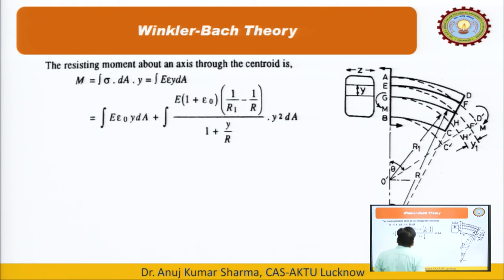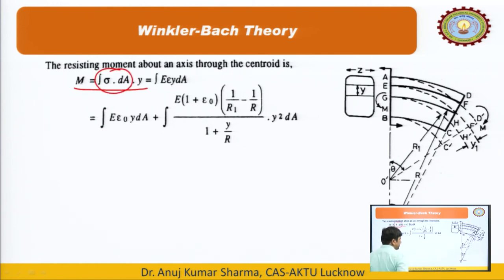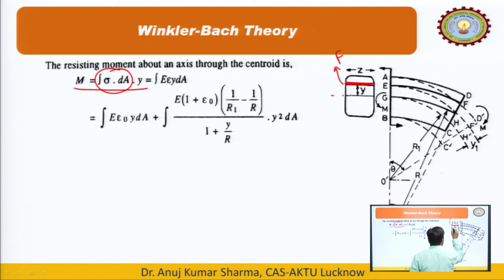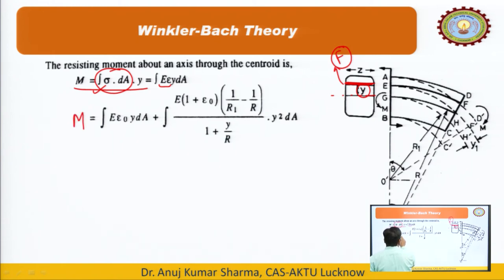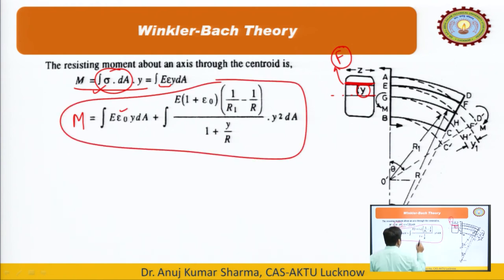Now we calculate the resisting moment about an axis through the centroid. Moment = ∫σ · y dA. Putting σ = Eε and substituting the strain expression, upon integration the term ε₀∫y dA appears. Since y is measured from the centroidal axis, ∫y dA = 0, so that term vanishes. We are left with: M = E(1 + ε₀)(1/R1 − 1/R) ∫[y²/(1 + y/R)] dA.